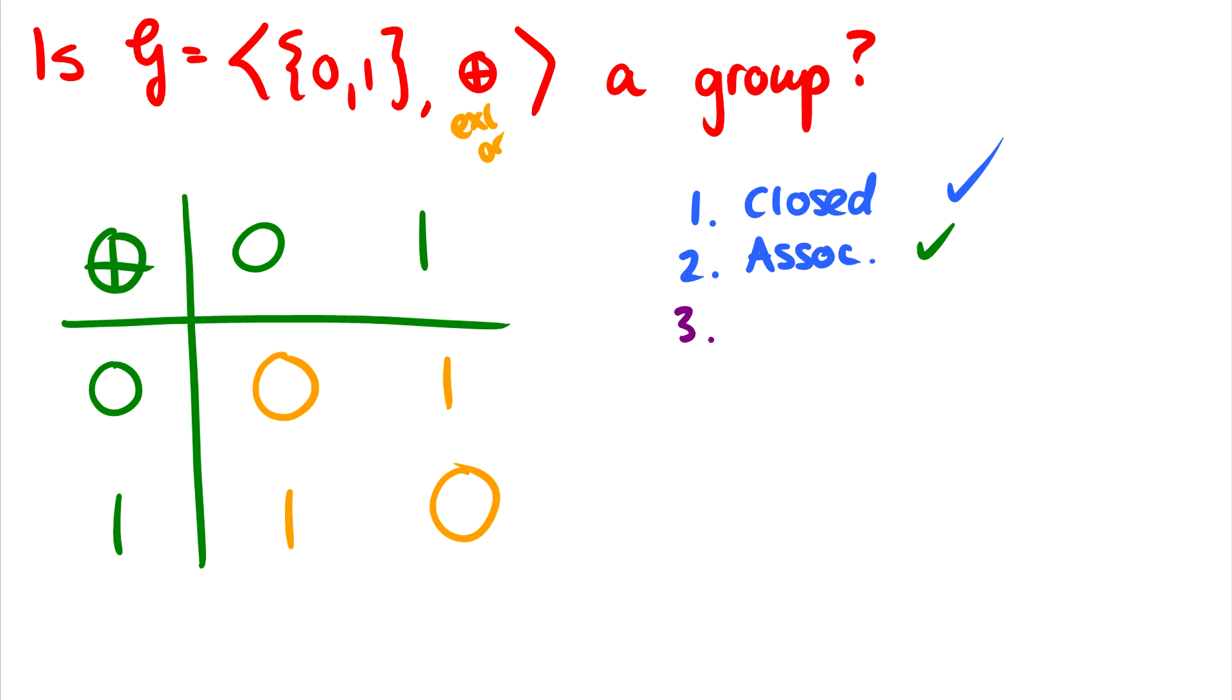The third, is there an identity? So in other words, is there an e for exclusive or? So is there something that always takes you back to its own value? And there is. So if we take 0 with 0, we get 0 back. If we take 0 with 1, we get 1 back. So our identity element here is actually 0.